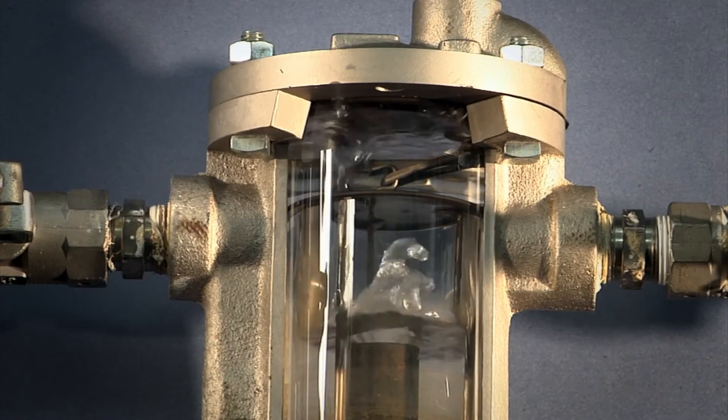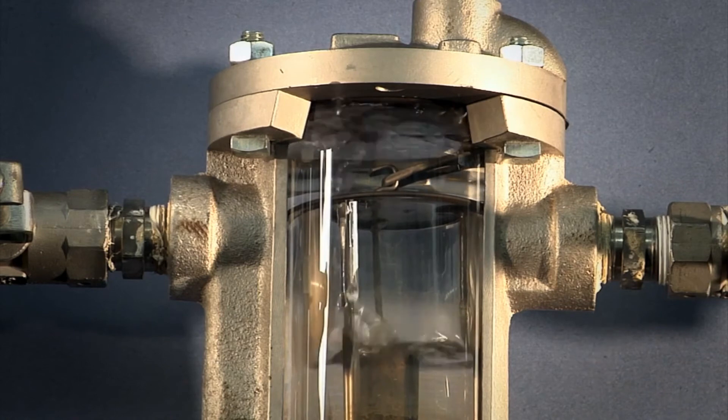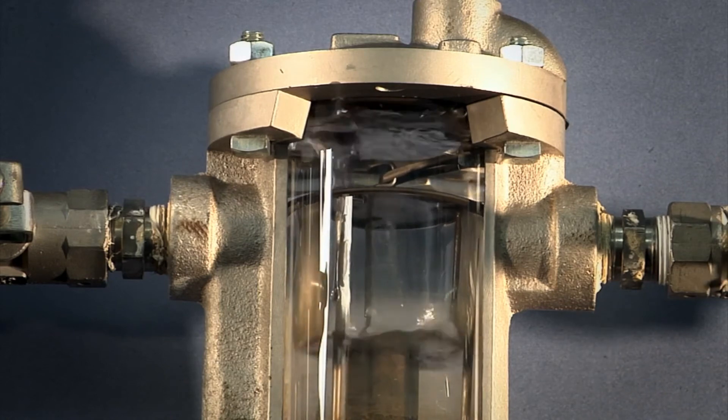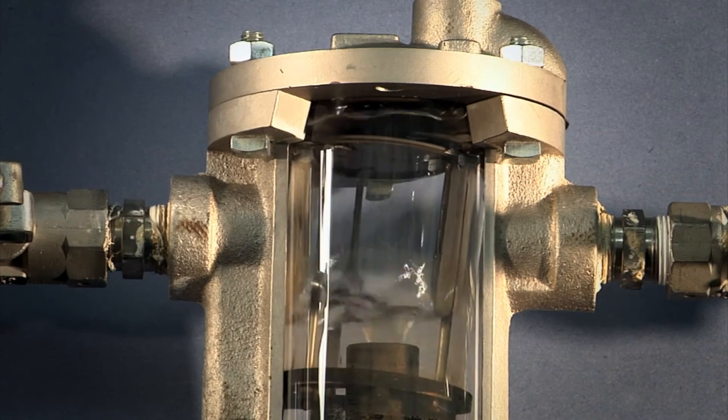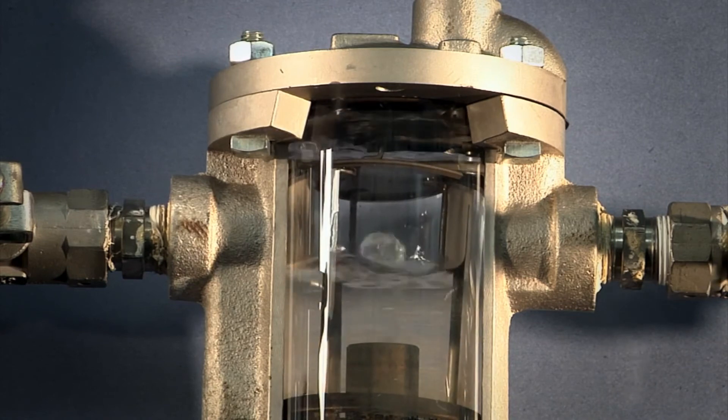therefore any steam that passes through the bucket vent will be condensed in the surrounding liquid. No steam can enter the top of the trap or be pushed downstream through the orifice.